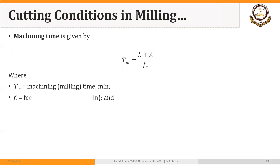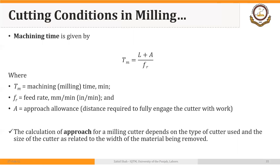The formula for machining time is the same: the length of cut divided by feed rate. Just like drilling, we also add approach allowance. This approach allowance for a milling cutter depends upon the type of cutter used and the size of the cutter as related to the width of the material being removed.